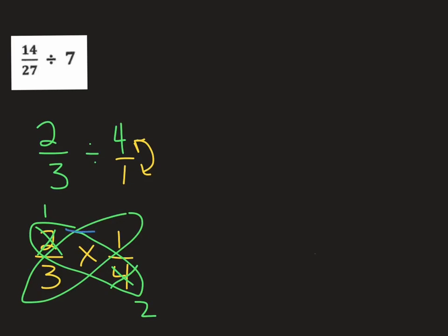So now I simply do top times top, bottom times bottom. So I have 1 times 1 is 1, 3 times 2 is 6. And I don't have to change that at all, so that would be my final answer. So that's an example of how to do this problem on your math assignment.